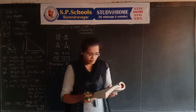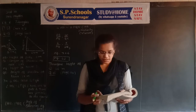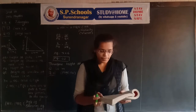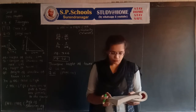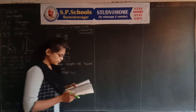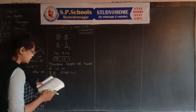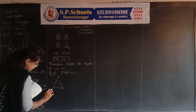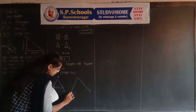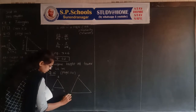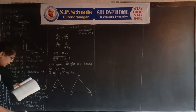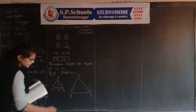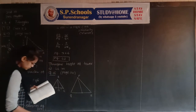If AD and PM are medians of triangle ABC and triangle PQR respectively, where triangle ABC is similar to triangle PQR, prove that AB upon PQ equals AD upon PM. The two triangles given are ABC and PQR. We draw both triangles. Since AD is a median, BD equals DC. Since PM is a median, QM equals MR.